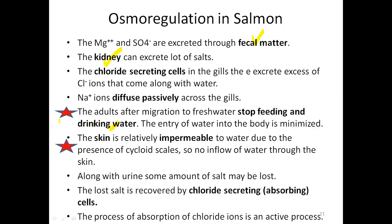The mechanism seen in salmon is exactly opposite to the eel body. When entering freshwater, the problem is that the surrounding medium is hypotonic, causing a lot of water to tend to enter the body. If they were to eat and drink, a lot of water could enter — so they stop feeding and drinking, minimizing water entering the body and reducing the hydration problem. Additionally, the skin becomes impermeable to water due to the presence of cycloid scales.